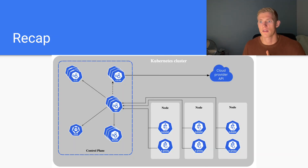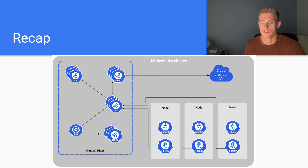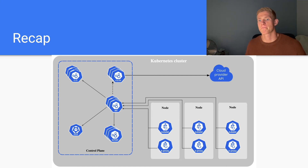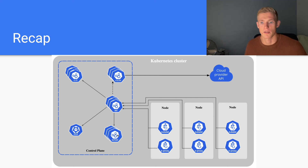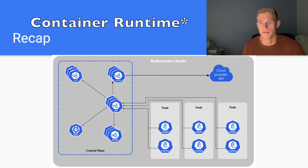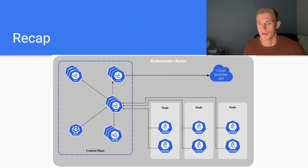Let's quickly recap our Kubernetes cluster architecture. We have a full understanding of the components at this point: the controller manager, the API server, etcd which stores the state of the cluster, and the scheduler which determines where pods can be deployed. If we wanted to deploy a pod, we send a request to the API server, the pod is stored in etcd, the scheduler determines which node it should go to, and the API server sends this information to kubelet. Kubelet then communicates with the container runtime interface, which handles the provisioning of the pod and its required resources.